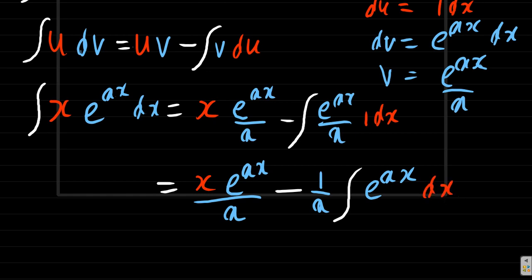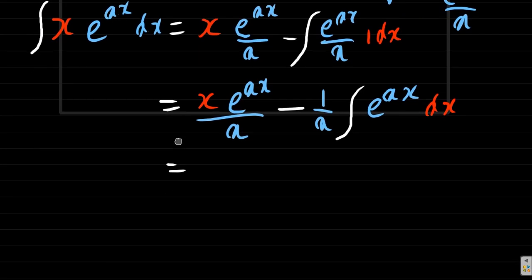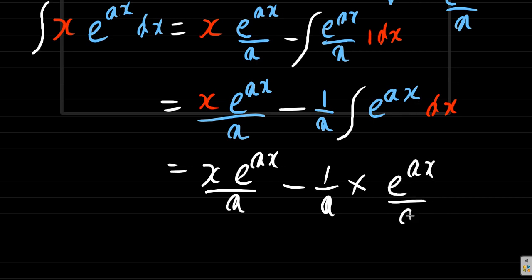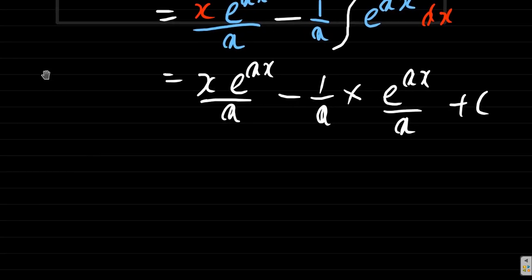In this case now what you have, I'll just write everything in one color now, it is x e to the ax over a minus 1 over a times e to the ax. When you integrate e to the ax dx, which we did earlier, you get e to the ax over a plus c. That's the solution. You can clean it up a bit.